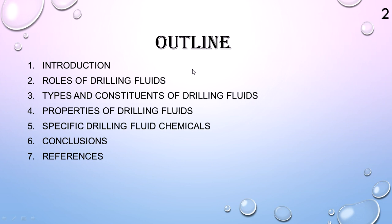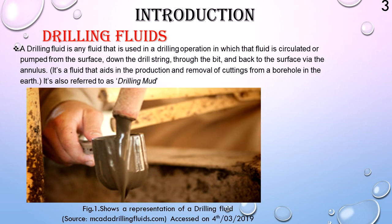In our introduction, a drilling fluid is any fluid that is used in a drilling operation, in which that fluid is circulated from the surface down the drill string. The drill string is composed of the drill pipe, the drill collar, and the drill bit, and back to the surface via the annulus. In simple terms, a drilling fluid can be referred to as drilling mud — any fluid that aids in the removal of cuttings from a borehole during the drilling operation.